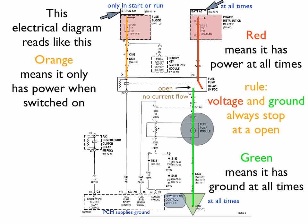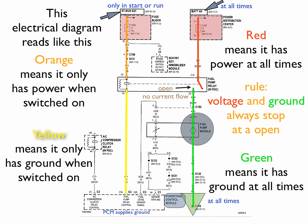Now, we look down here. We see that the PCM supplies ground for the fuel pump relay control. So we're going to color this yellow. Now yellow means it only has ground when it is switched on.